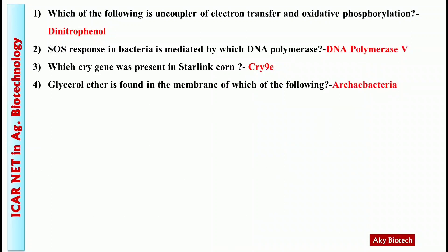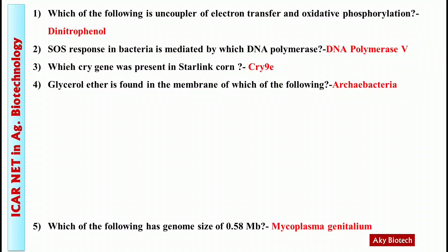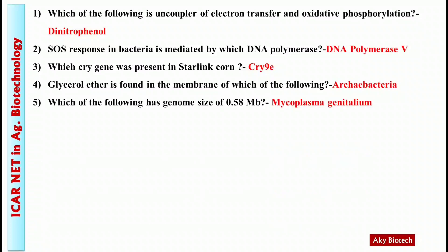Question 4: Glycerol ether is found in the membrane of which of the following? Answer: Archaebacteria. Question 5: Which of the following has a genome size of 0.58 Mb? Answer: Mycoplasma genitalium.